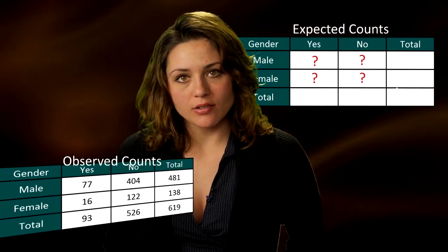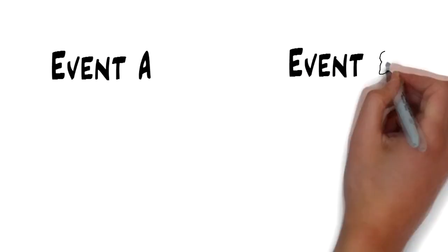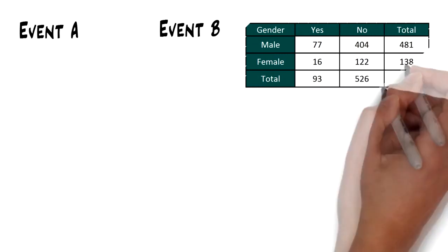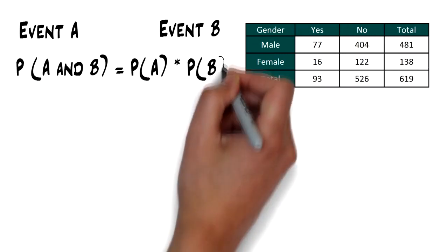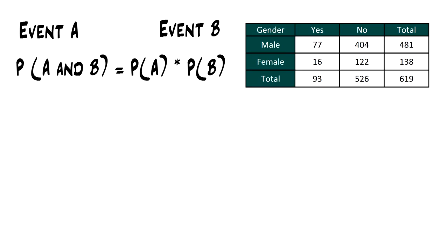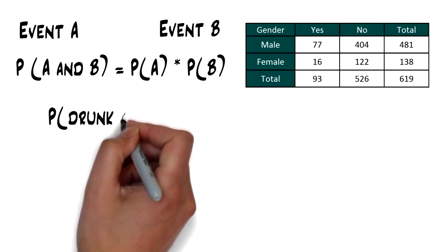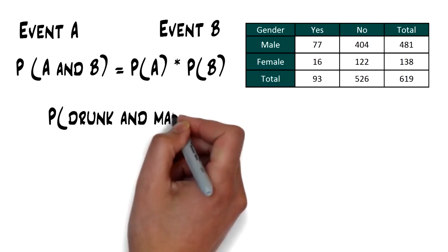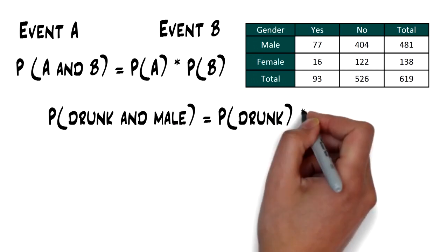How are the expected counts calculated? If events A and B are independent, then the probability of A and B equals the probability of A times the probability of B. We use this rule for calculating expected counts one cell at a time. Applying the rule to the first top left cell, if driving drunk and gender were independent, then the probability of being drunk and male is equal to the probability of being drunk times the probability of being male.